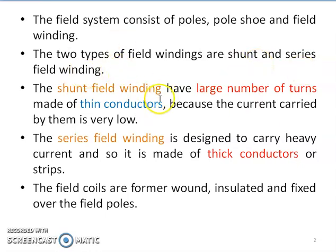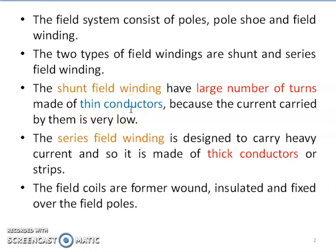A large number of turns are used in the case of shunt field winding, and because of the large number of turns, resistance will be very high. As resistance is very high, the current carried by the shunt field winding will be very low; hence thin conductors can be used for shunt field winding.